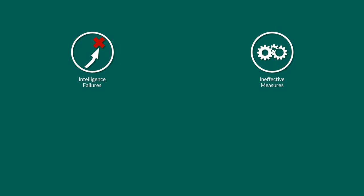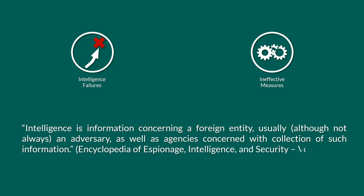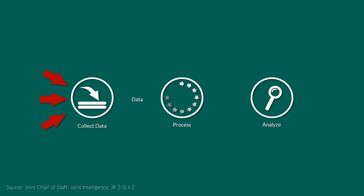So what is intelligence? Intelligence is information concerning a foreign entity, usually although not always an adversary, as well as agencies concerned with collection of such information. To produce intelligence, data must be collected, processed and analyzed, as you can see from this illustration taken from a Joint Chief of Staff publication. The data gets collected from the operational environment, which is then processed into information and finally transformed into intelligence by analysis. To put it simply, data is a raw material and intelligence is a product.